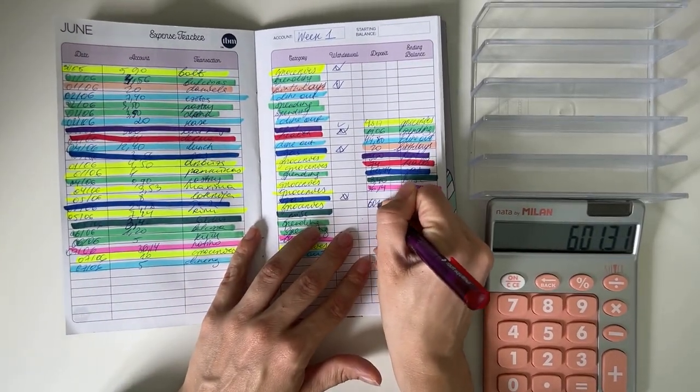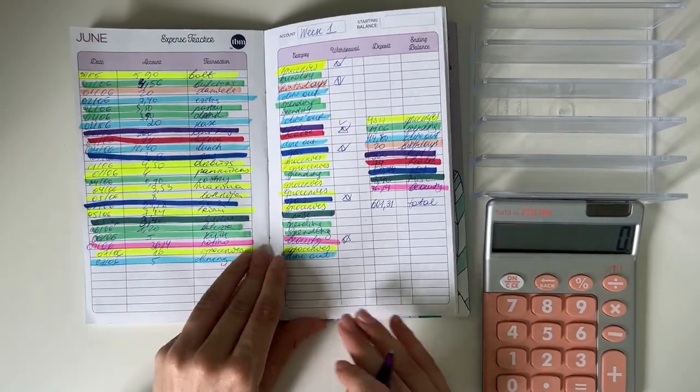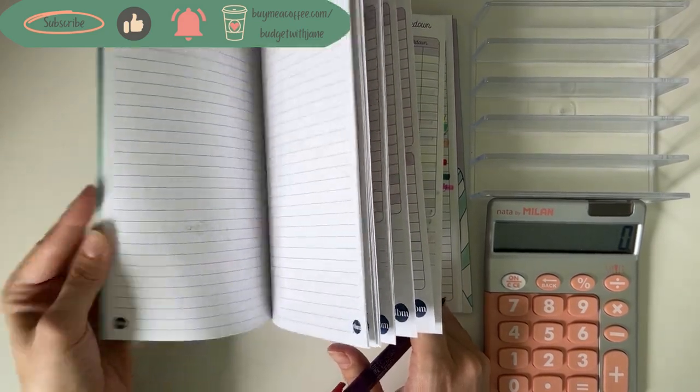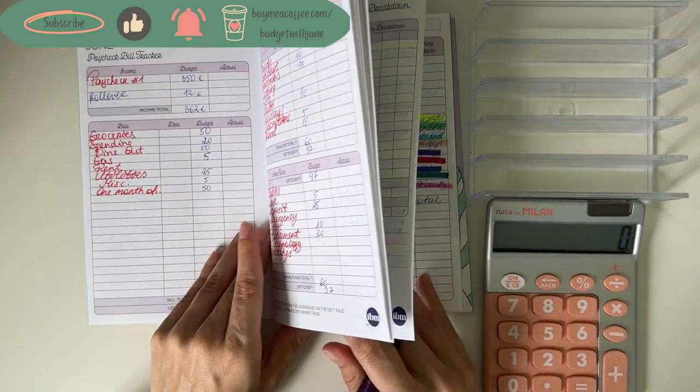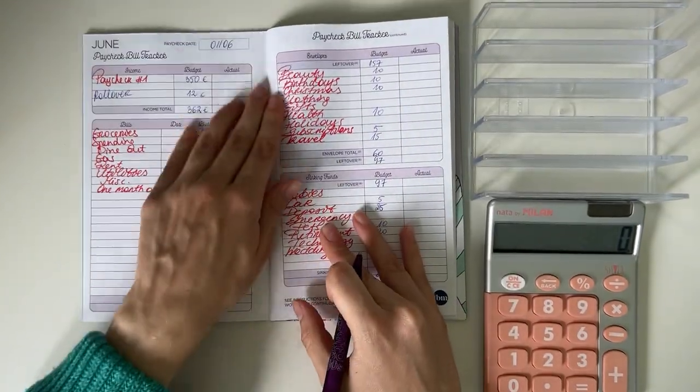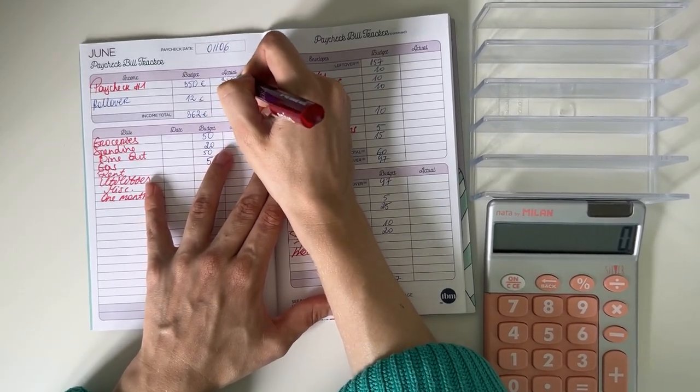So let's go and switch to the weekly budget layout. We're going to do the actual expenses and we'll see any rollover if we have it. So the paycheck was 350, the rollover was 12, so 362 to work with for the week.